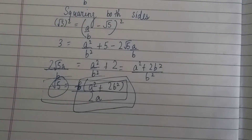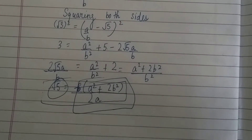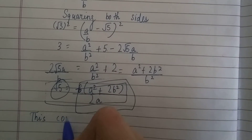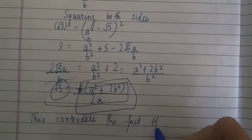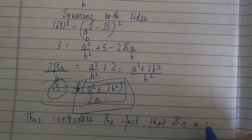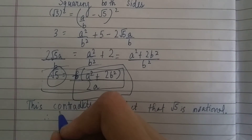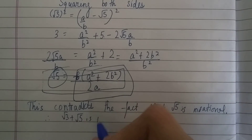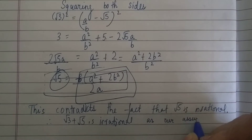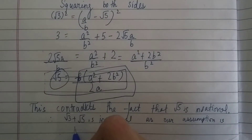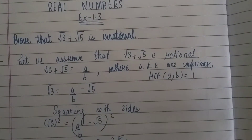We know that √5 is irrational, but the right-hand side — (a² + 2b²) / (2a) — is made of real numbers a and b, so it is rational. This contradicts the known fact that √5 is irrational. Therefore, our assumption is wrong, and hence √3 + √5 is irrational.